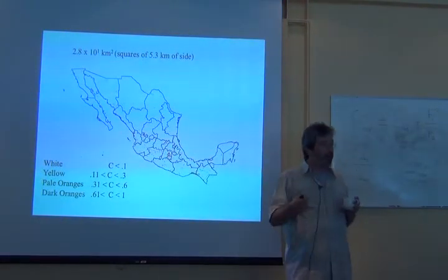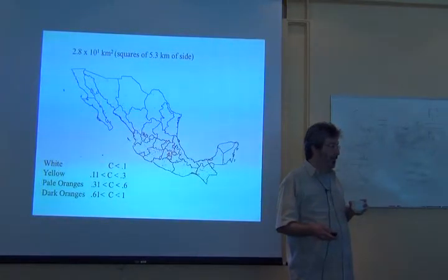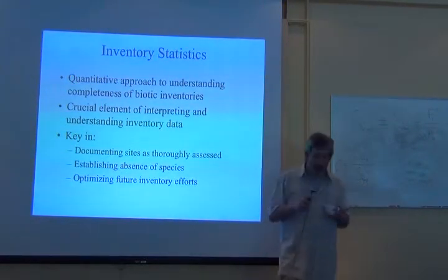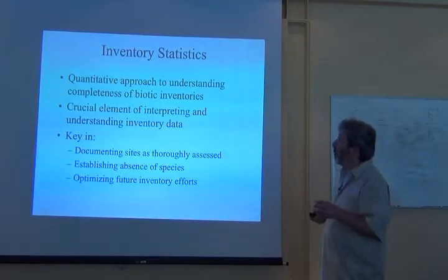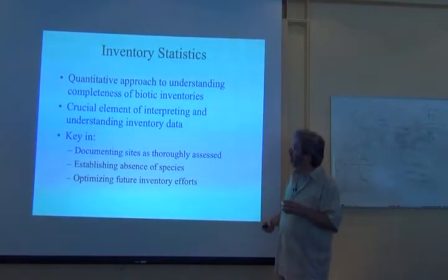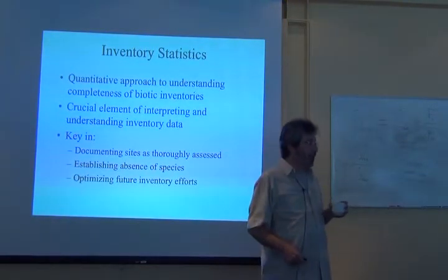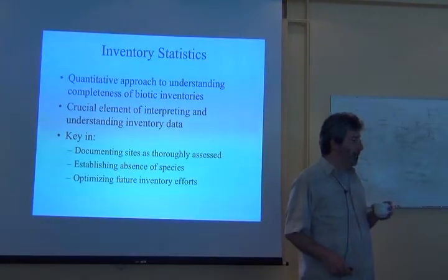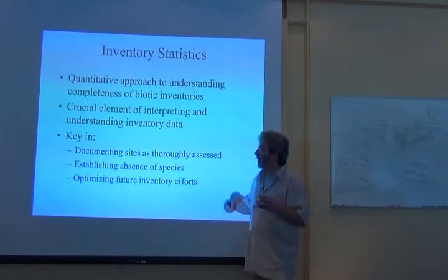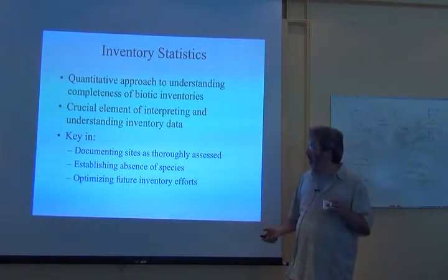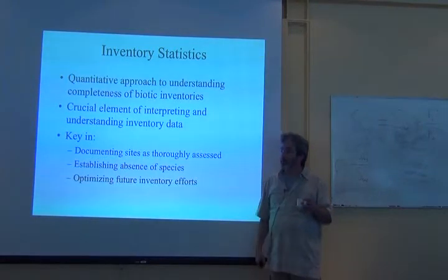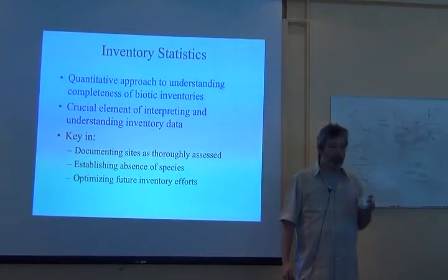All of this is scale-dependent. The inventory statistics offer us quantitative ideas about how done we are — how far along we are in this process. You really shouldn't interpret an inventory species list unless you see the statistics that accompany it. It's very key in documenting whether sites are thoroughly assessed or not. It's not critical in establishing absence of species, but very good in helping us optimize future inventory efforts.